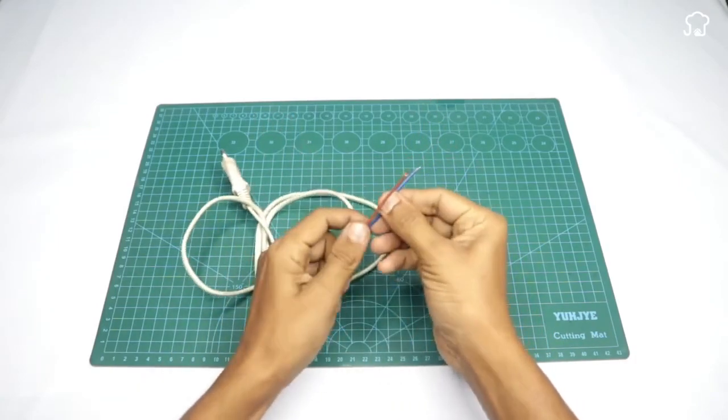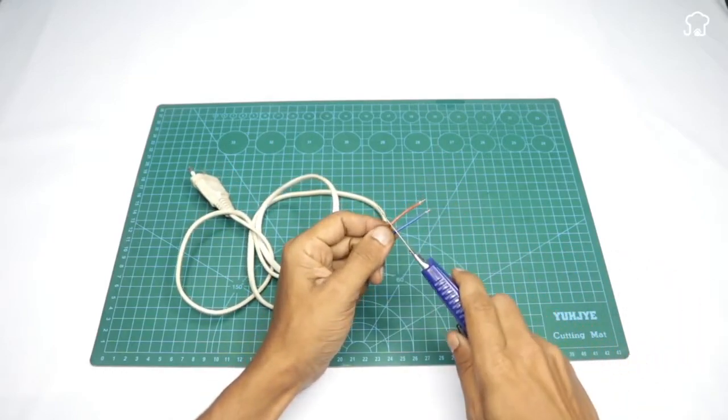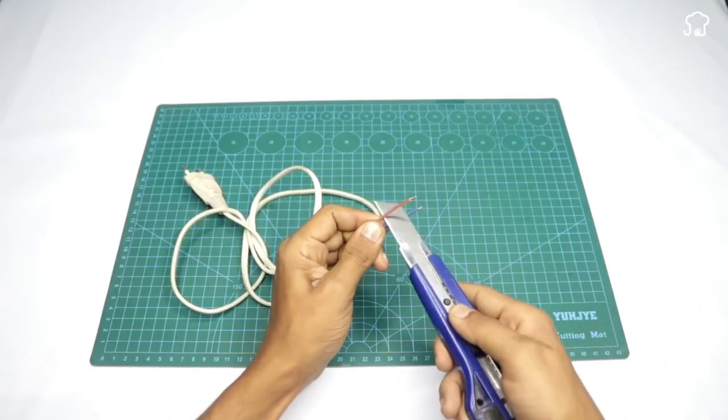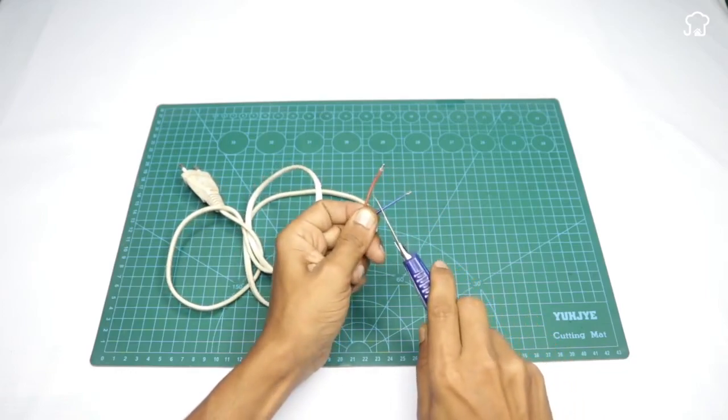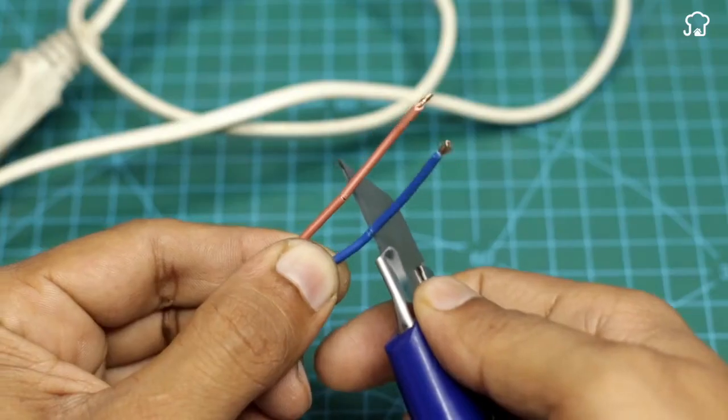First, look for an electrical extension cord and a cutter or pliers to work with the wires. Carefully remove the outer cover of the wires to expose the cables.